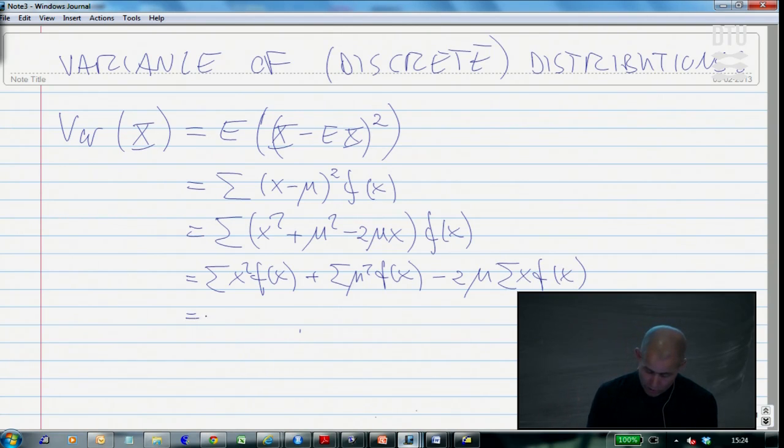The first part here becomes the mean of the square of x. And the second part: mu squared can be taken outside the summation sign, and the sum of f of x, that's the sum of a density, which is simply one. So altogether, it's mu squared.